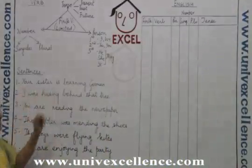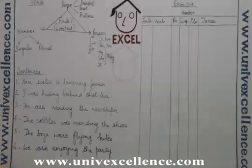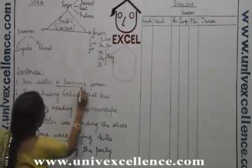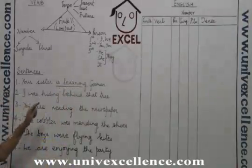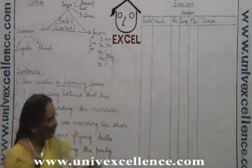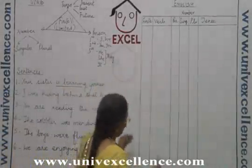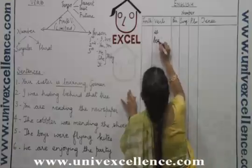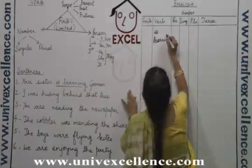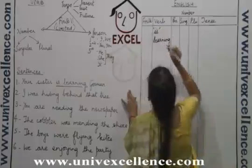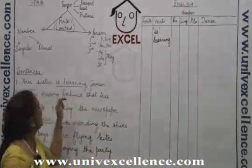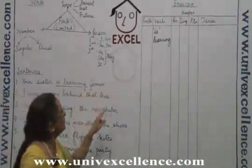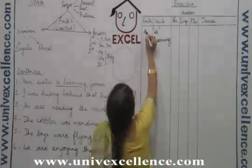The first sentence is: 'Your sister is learning German.' The verb here is 'is learning.' We shall place this verb in that column — is learning. Now the finite verb is 'is,' because in 'learning' we have the -ing form. So for the finite verb we write 'is.'